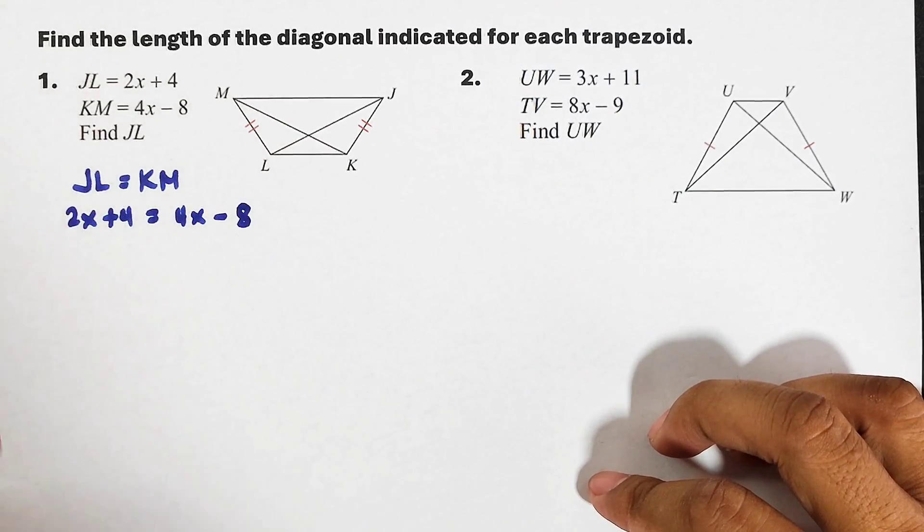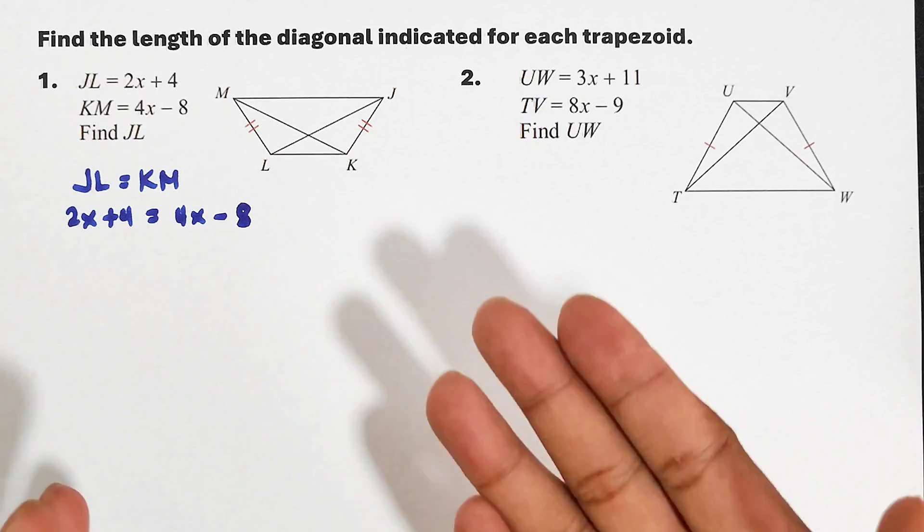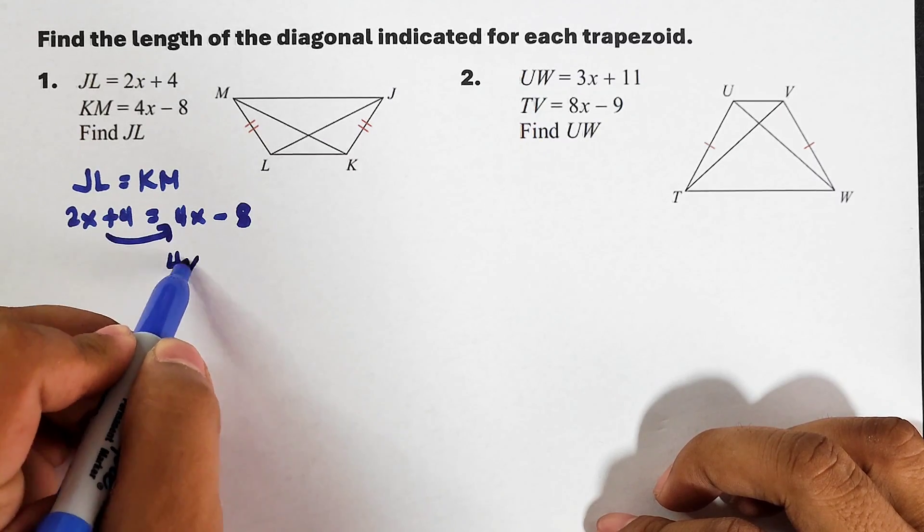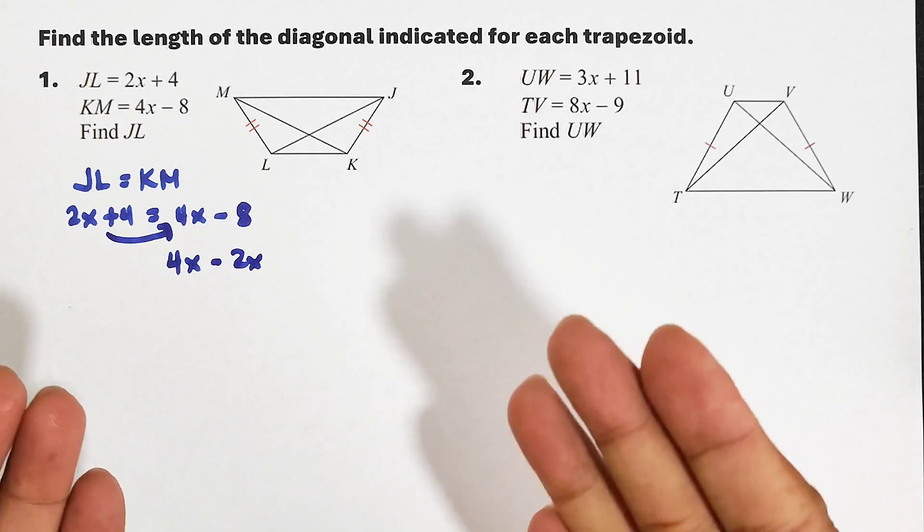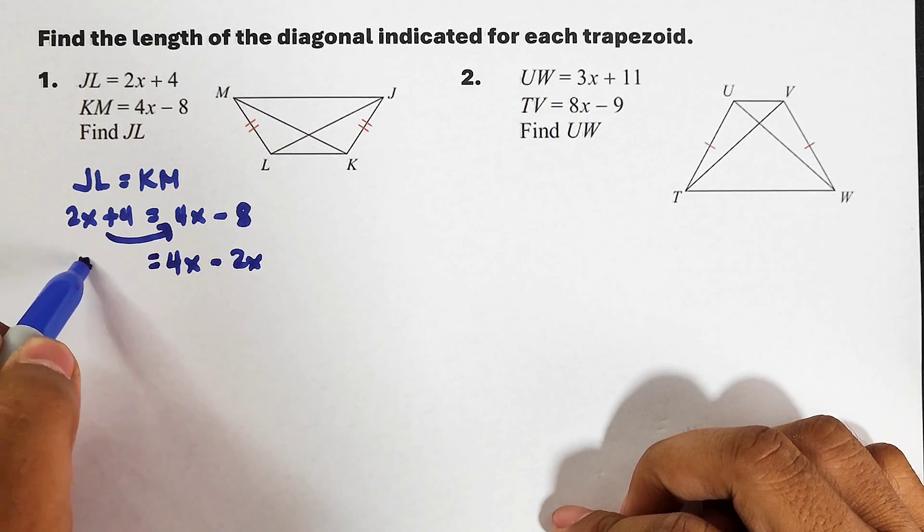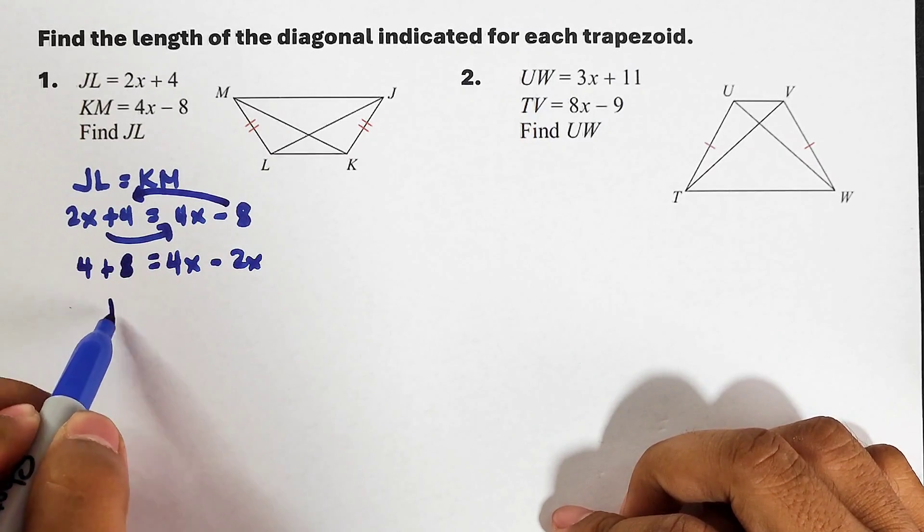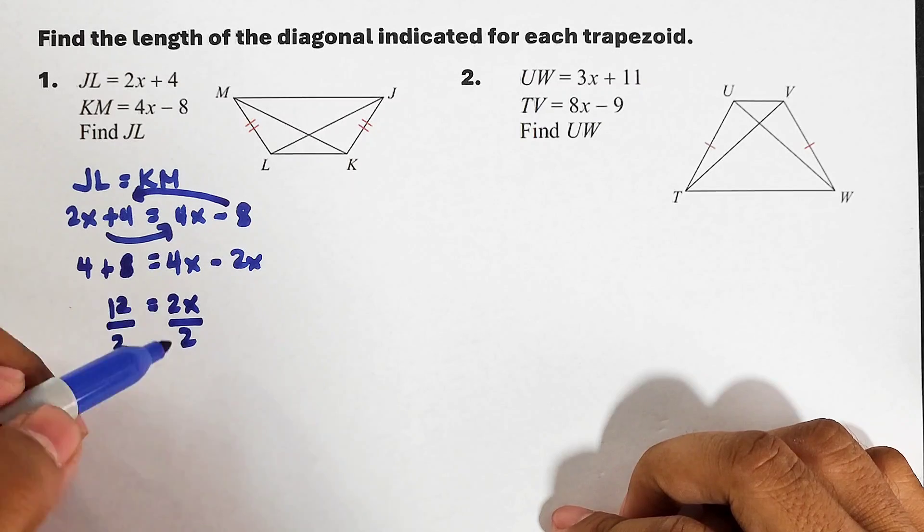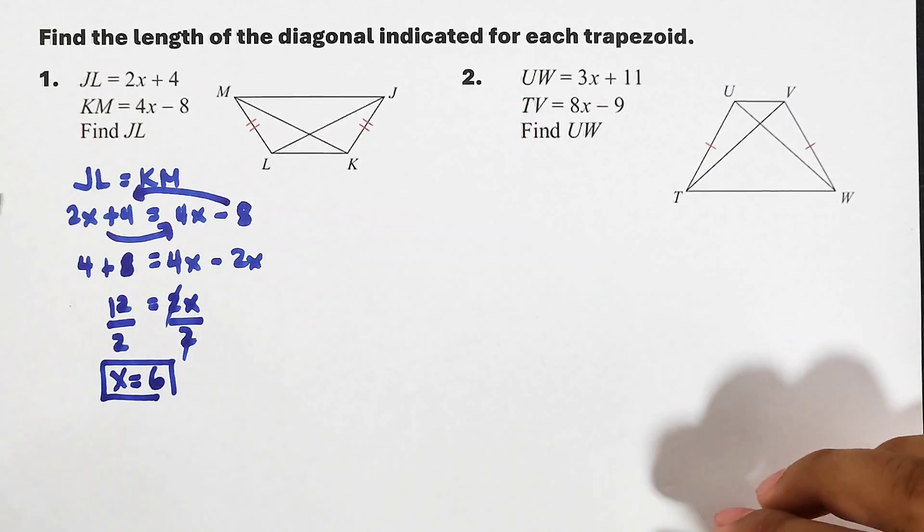This is 2x plus 4 equals 4x minus 8. So we can transpose 4x to the other side, but in my routine, I'm transposing the variable with the smaller coefficient. I will transpose 2x to the other side. It will become 4x minus 2x. Remember, when you are transposing, you need to change the operation or the sign of that term. And on the other side I will copy 4. I will transpose negative 8 to the other side; it will become plus 8. Here, 4 plus 8 is 12. This is 2x. Divide by 2. Cancel. x equals 6, and this is the answer for the variable x.